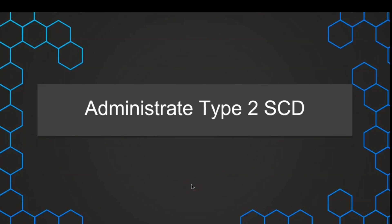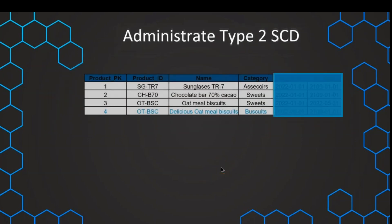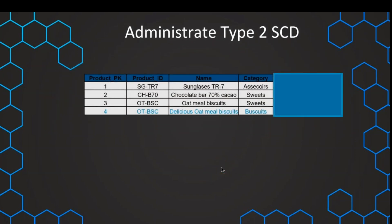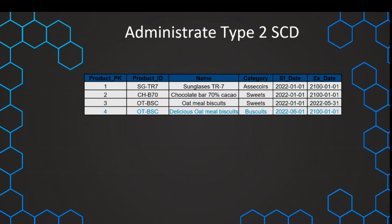In the previous lecture, we've seen that this type 2 slowly changing dimension is super powerful because with that we can keep track of the history in our dimensions. But unfortunately, we've also seen that it's not perfect yet and we should do some additional things. For example, with this previous approach, we could not identify the current value, such as the current product name. This is one reason why we should include a so-called effective date and an expiration date.